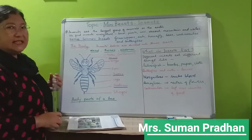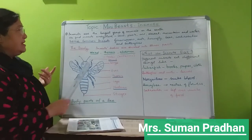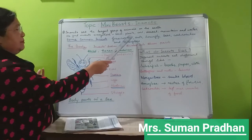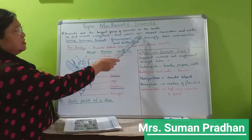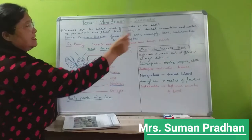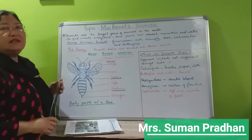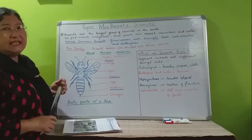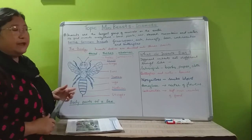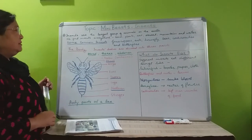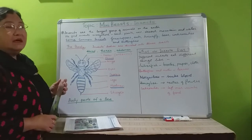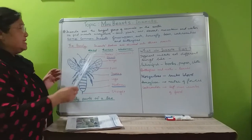Now, where do you find these insects? We find insects everywhere — on land, plants, soil, desert, mountain, and in water. In water means you'll find insects in ponds, rivers, and lakes. Now we'll see some common names of insects.